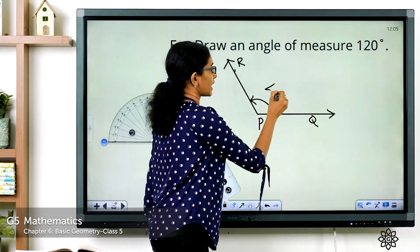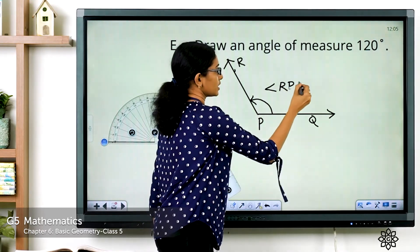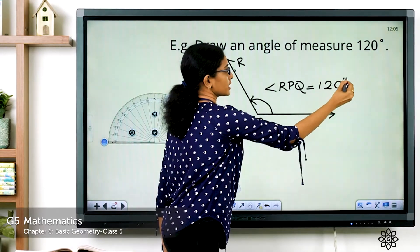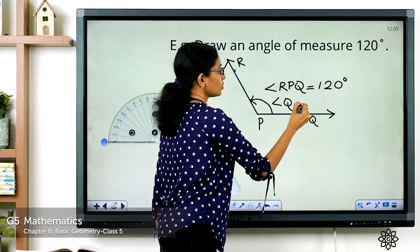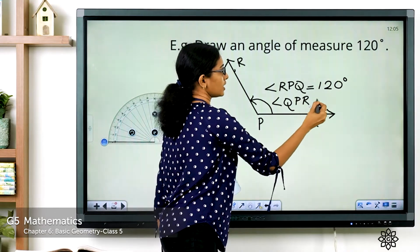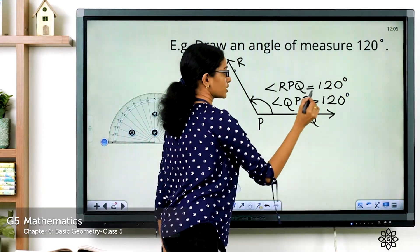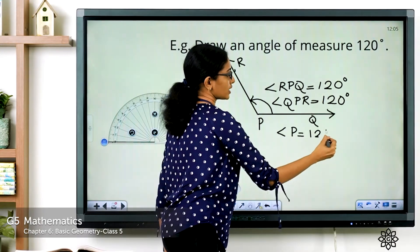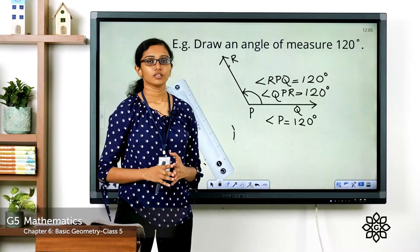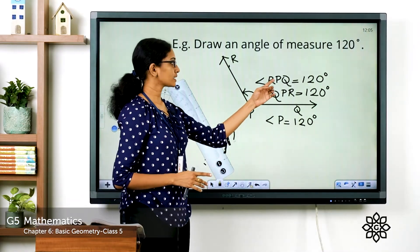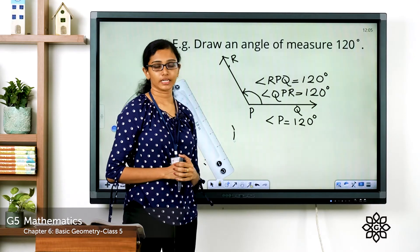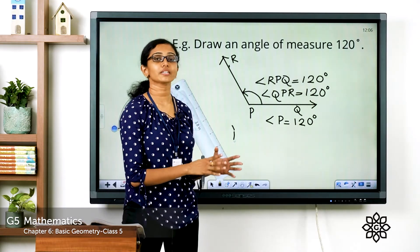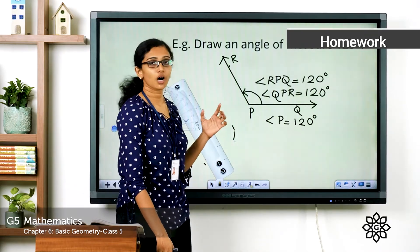Write the name of the angle: angle RPQ is equal to 120 degrees, or angle QPR is equal to 120 degrees, or angle P is equal to 120 degrees. Note that the vertex is mentioned in the middle of the name. Now that you are clear with how to construct an angle using a protractor, let's move on to the homework.